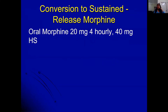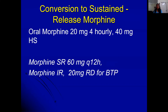To convert from immediate-release to sustained-release morphine: calculate the total 24-hour dose. For example, if a patient is on 20 mg four-hourly with 40 mg at bedtime, that is 20 mg times six doses = 120 mg per day. Sustained-release is given twice daily, so 60 mg morning and 60 mg at night. The rescue dose for breakthrough pain remains morphine immediate-release — 20 mg as needed.